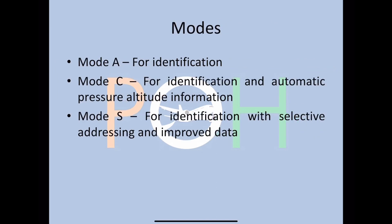There are three modes. Mode A is the basic mode for identification purposes only — you get the call sign. Mode C is for identification and also transmits automatic pressure altitude information. Mode S is the latest, most commonly available on commercial jets, providing identification with selective addressing and improved data handling, allowing more data to be sent.